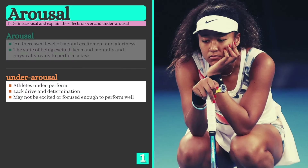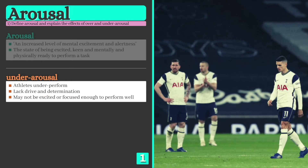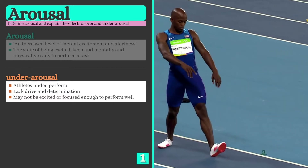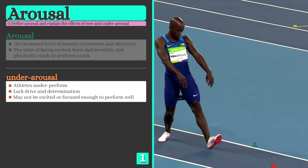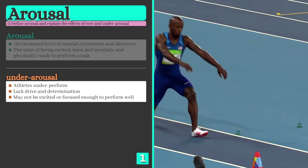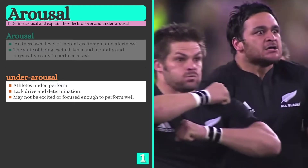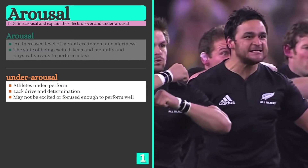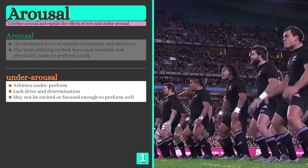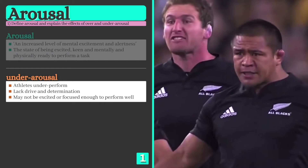If an athlete is under aroused, they may not be focused or excited enough to perform effectively, and are likely to lack drive and determination. To mitigate against this, athletes use a range of techniques to pump themselves up before or during competition. For example, New Zealand's rugby team performs a ritual dance called the Haka to raise their arousal levels prior to kick-off.